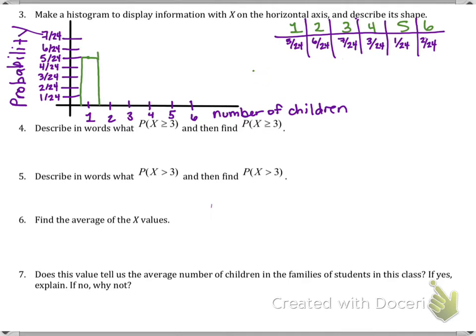Four is 3 out of 24, five is 1 out of 24, and six is 2 out of 24. There is my histogram.